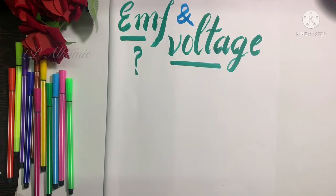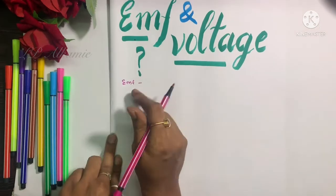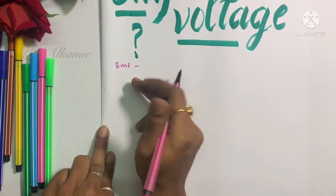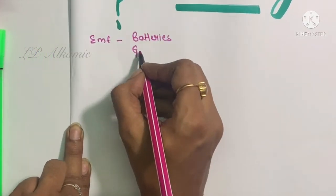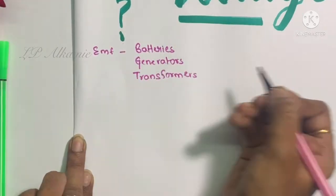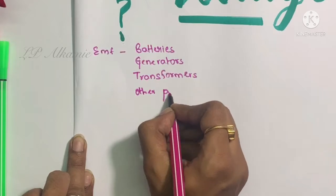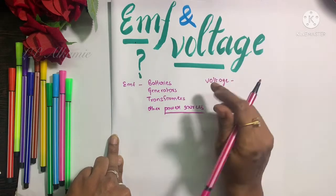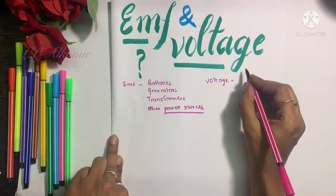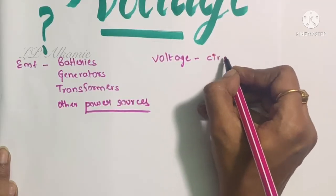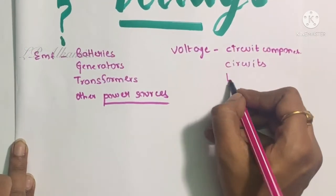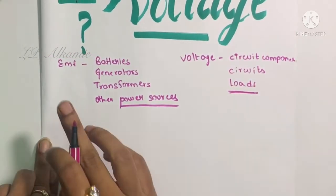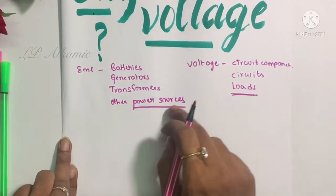EMF and voltage — do they have the same units? Yes, both have the same units and are denoted by volts. So is there any difference between them, and how do we distinguish between them? Basically, we use the term EMF when we speak about batteries, generators, transformers, and other power sources, whereas we use the term voltage when we speak about circuit components, circuits, or loads.